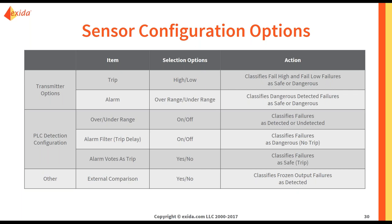The last option is external comparison. If you have a separate transmitter signaling a separate PLC, you can compare the outputs of the transmitters to see if something is wrong with the transmitter in your safety instrumented function. In this case, you might actually be able to detect frozen output failures. Usually you would not know it is frozen because it is in the healthy range. However, if the other transmitter you are comparing to is showing different values, it might indicate a frozen output failure, and you can count that as detected.